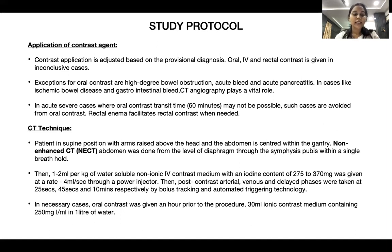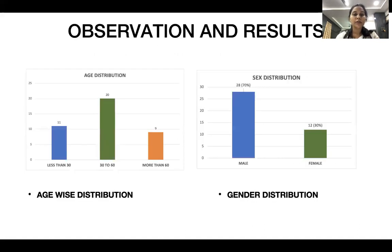CT technique: the patient is placed in supine position with arms raised above the head and abdomen centered within the gantry. Initially, non-enhanced CT is taken from the level of the diaphragm through the symphysis pubis. Then 1-2 ml per kg of water-soluble non-ionic intravenous contrast is given at a rate of 4 ml per second through a power injector. Post-contrast arterial, venous, and delayed phases are taken at 25 seconds, 45 seconds, and 10 minutes respectively. In necessary cases, oral contrast is given an hour prior to the procedure.